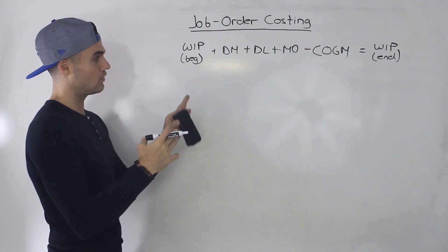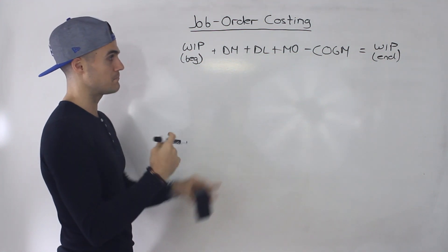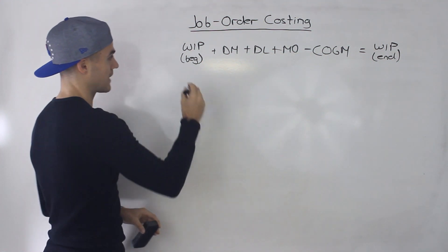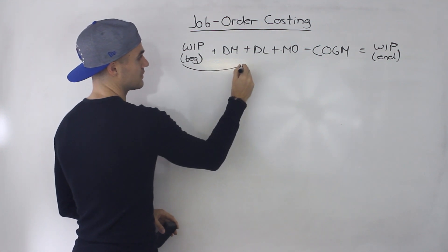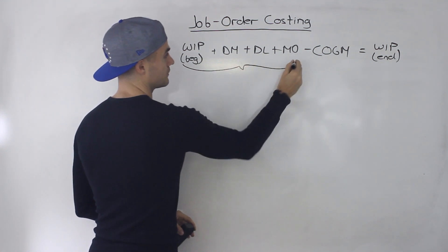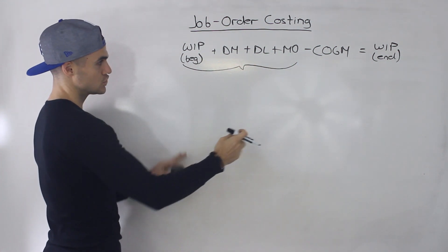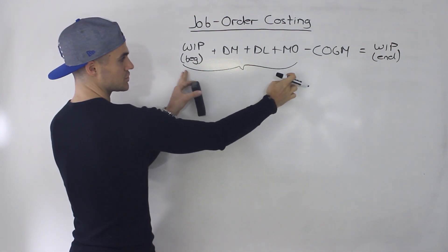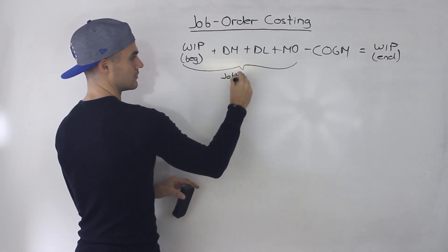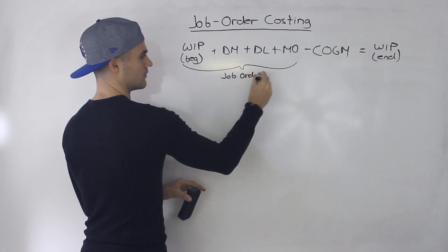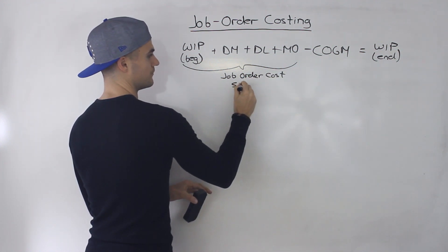You can also look at this from a per job basis, from a per job perspective. There's something called a job order cost sheet, and a job order cost sheet looks at this portion of that manufacturing flow.